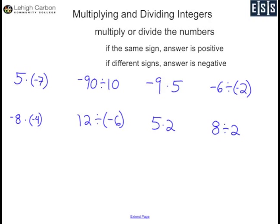5 times negative 7: 5 times 7 is 35. They have different signs, so my answer is negative 35. Negative 90 divided by 10: 90 divided by 10 is 9. They have different signs, so my answer is negative 9. Negative 9 times 5: 9 times 5 is 45. Different signs, so my answer is negative 45.